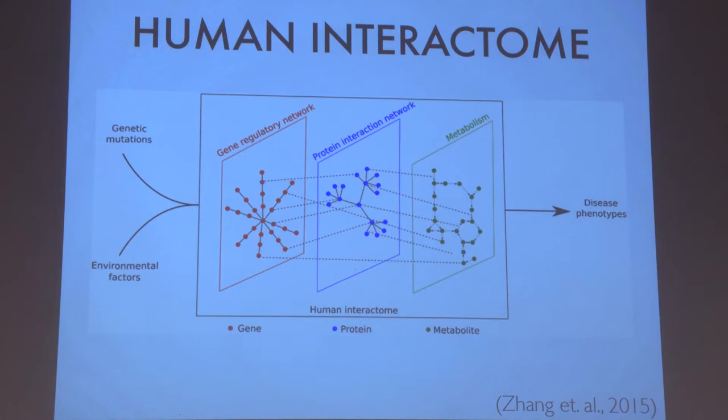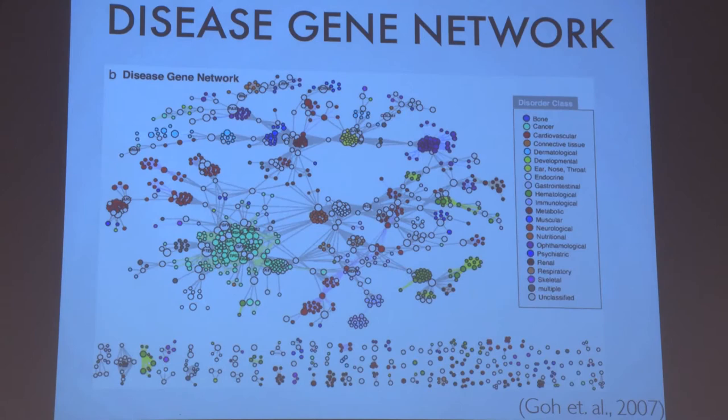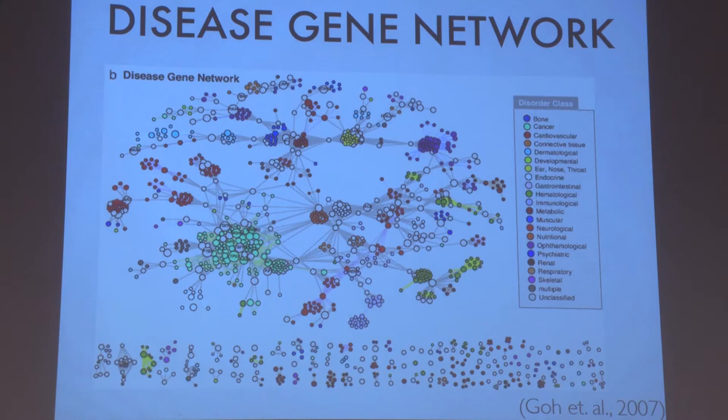However, the human interactome is not fully complete. Currently it contains an incomplete protein interactome, showing all of the different protein-protein interactions in a cell. It also contains causal links between diseases and genes — two genes on this network are connected if they are both implicated in the same disease. As you can see, the genes form these highly connected clusters, or disease modules, on the network.